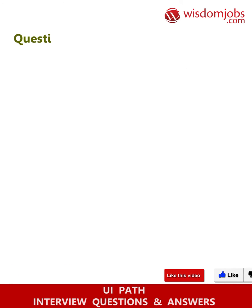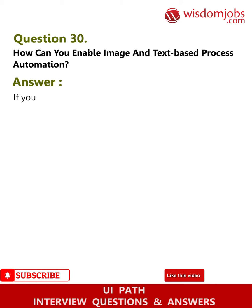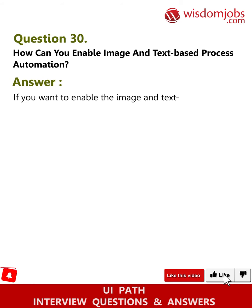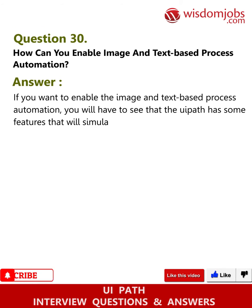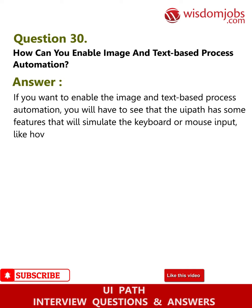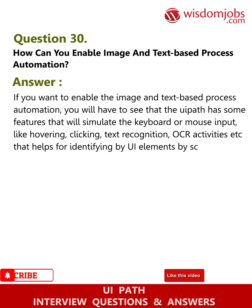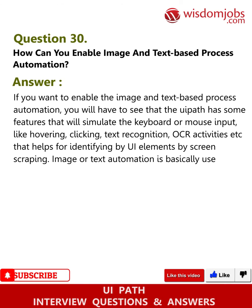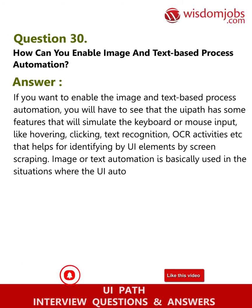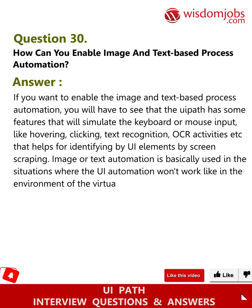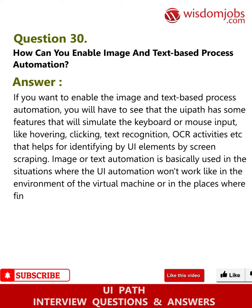Question 30: How can you enable image and text-based process automation? Answer: UiPath has features that simulate keyboard or mouse input like hovering, clicking, text recognition, OCR activities, etc., that help identify UI elements by screen scraping, image, or text. Text automation is used in situations where UI automation won't work, such as in virtual machine environments or places where finding selectors using normal methods is not easy.